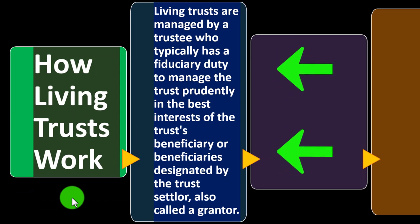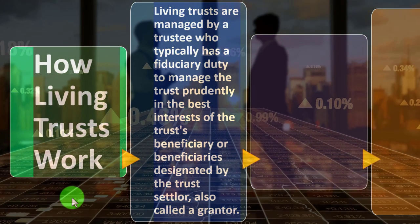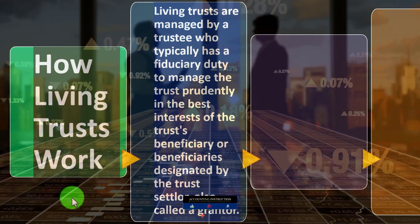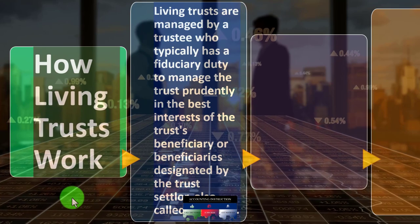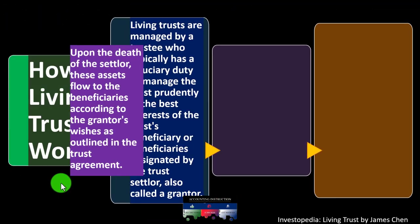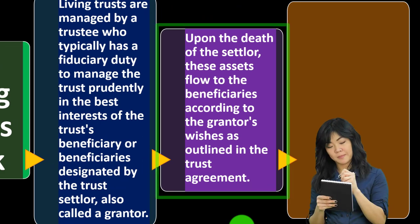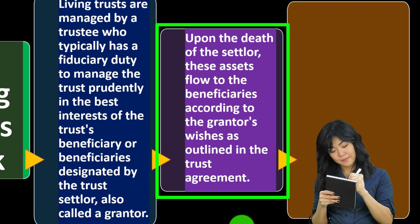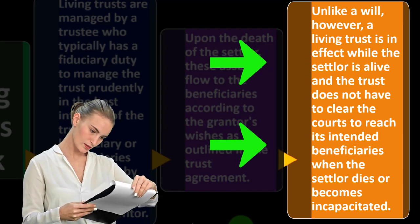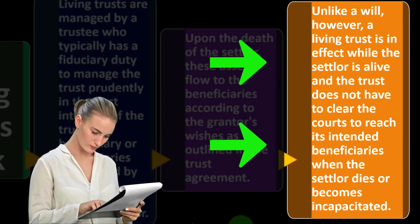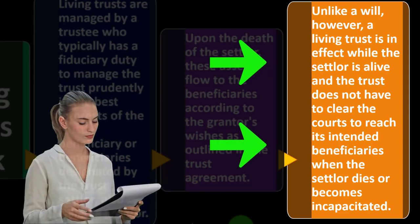Living trusts are managed by a trustee who typically has a fiduciary duty to manage the trust prudently in the best interest of the trust's beneficiary or beneficiaries, as designated by the trust settler — also called a grantor. The trustee may be paid to manage the trust, acting as an agent on behalf of the eventual beneficiaries. Upon the death of the settler, assets flow to beneficiaries according to the grantor's wishes as outlined in the trust agreement.